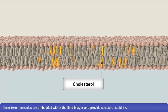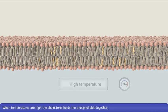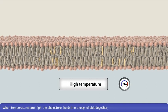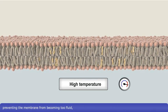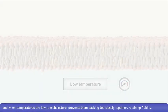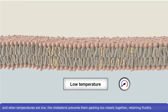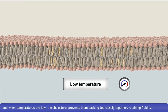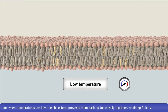Cholesterol molecules are embedded within the lipid bilayer and provide structural stability. When temperatures are high, the cholesterol holds the phospholipids together, preventing the membrane from becoming too fluid. And when temperatures are low, the cholesterol prevents them packing too closely together, retaining fluidity.